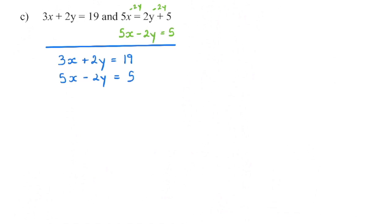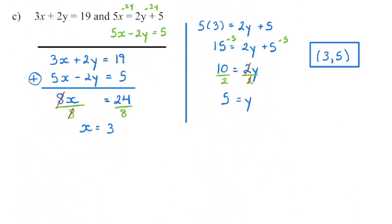Then we're going to take a look at our coefficients and say: I can see that I have a 2 and a negative 2 on my y variable. Do I need to add or subtract those to bring my y term to 0? We know 2 plus negative 2 will give us 0, so I'm going to add those two equations together. I circle my sign just so it's really clear what we're doing, then add every term. To solve for y, I chose to substitute into the second equation — 5 times 3 is 15 — then isolate y and we get a y value of 5.